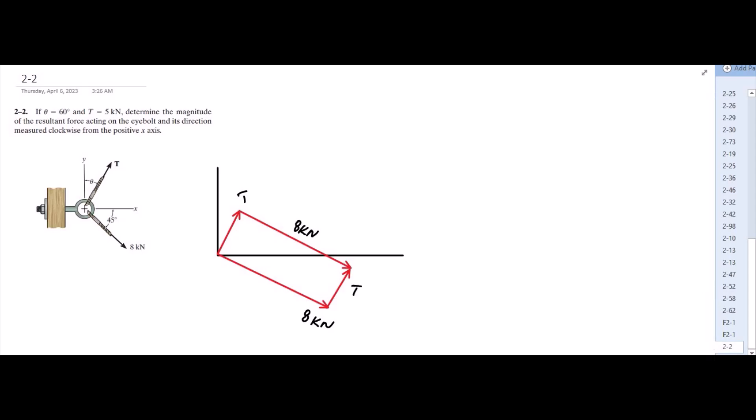The resultant would be drawn from the tail of these two vectors to the opposite end. The 8 kN force is making an angle of 45 degrees with the horizontal, and this force T is making an angle of theta with the vertical.